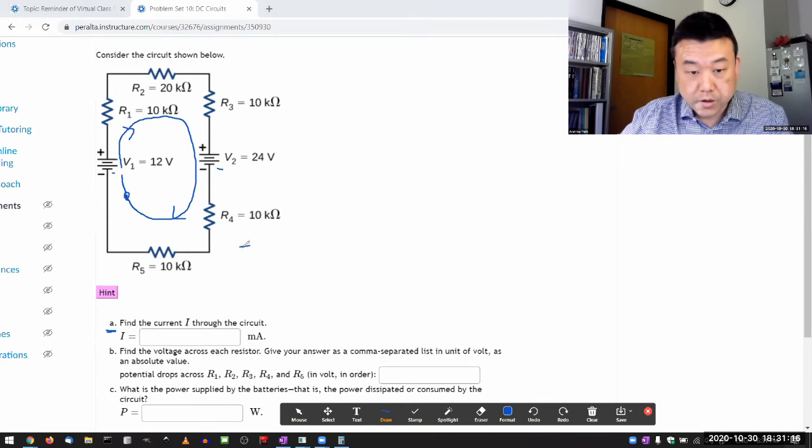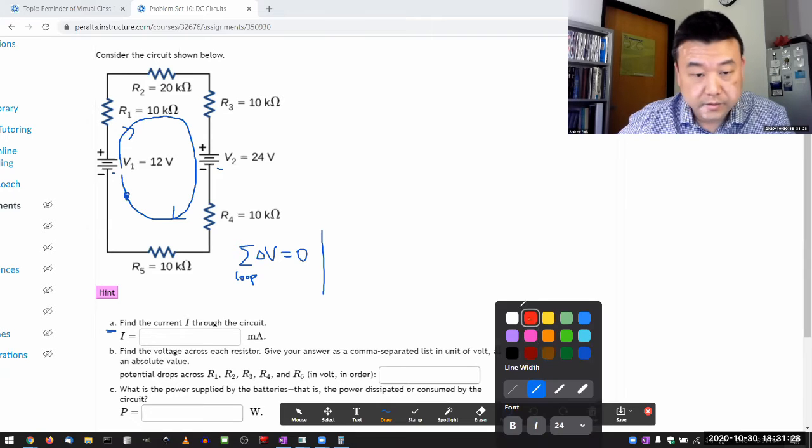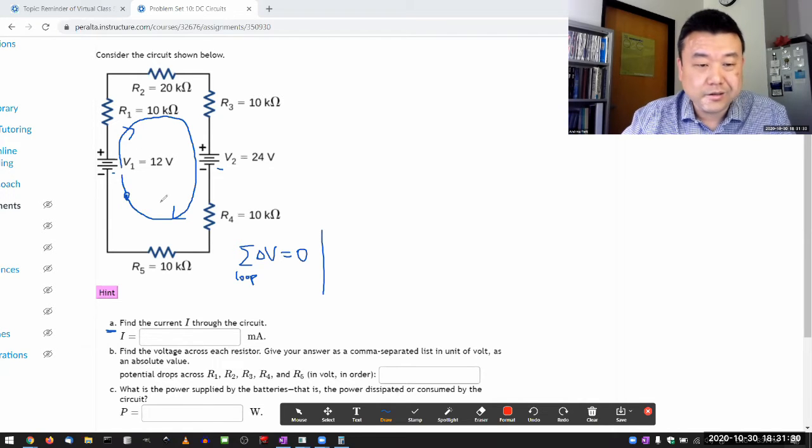So the loop rule equation, which says sum of all the changes in voltage around the loop is equal to zero, it gets written out this way. I should have defined the current. So since I already defined the loop, let me just define my current as going this way.